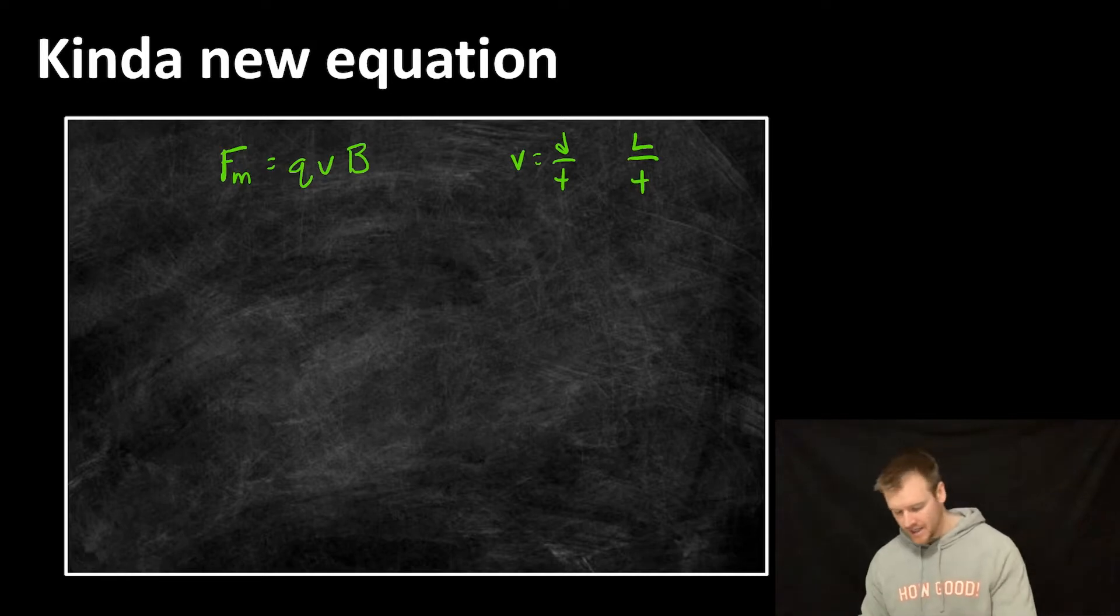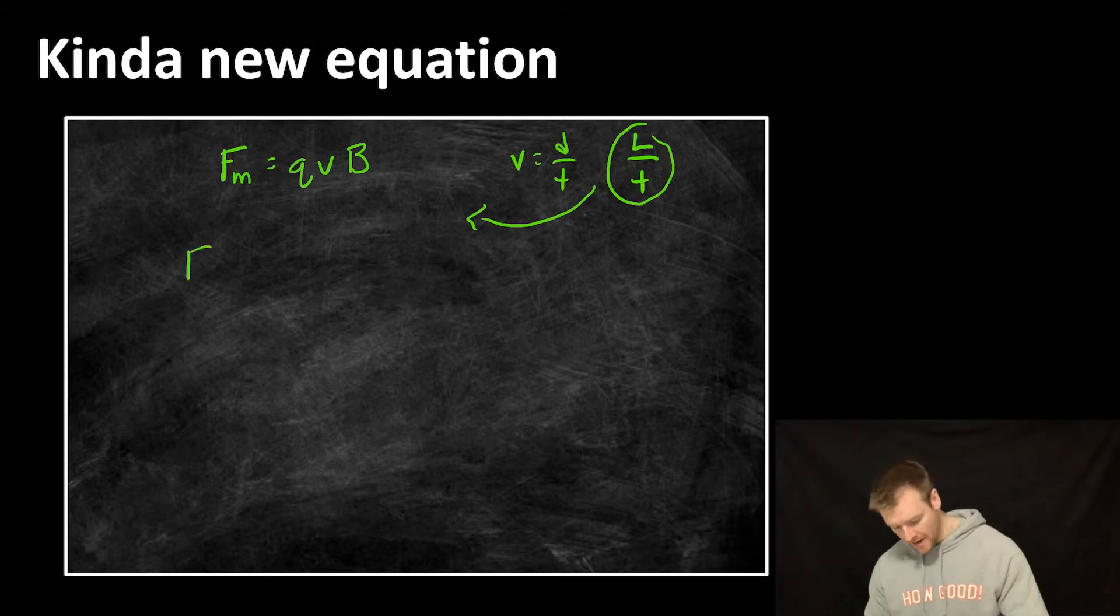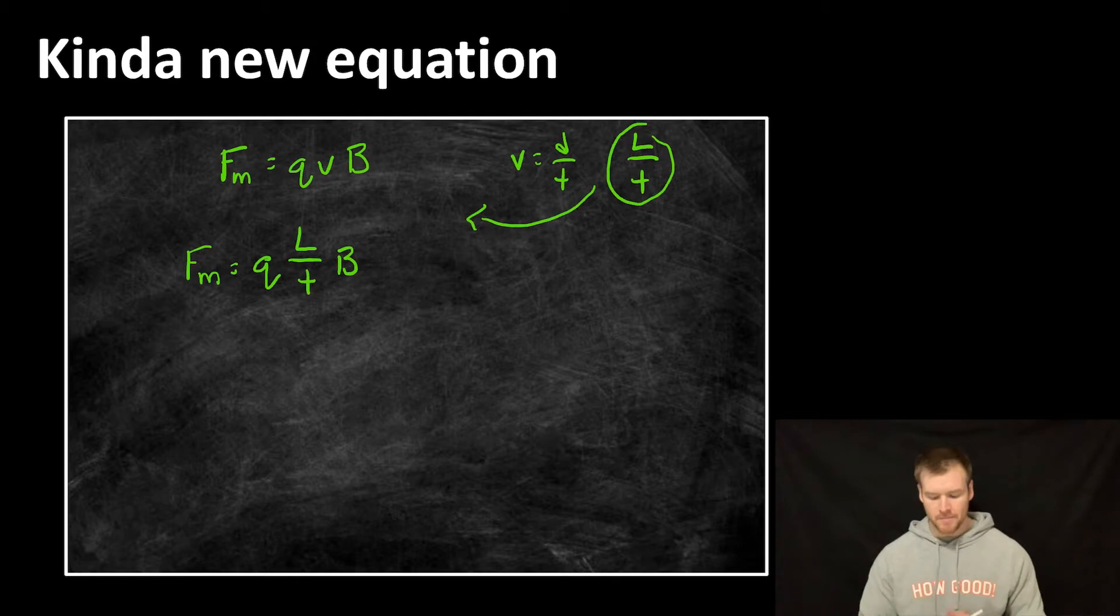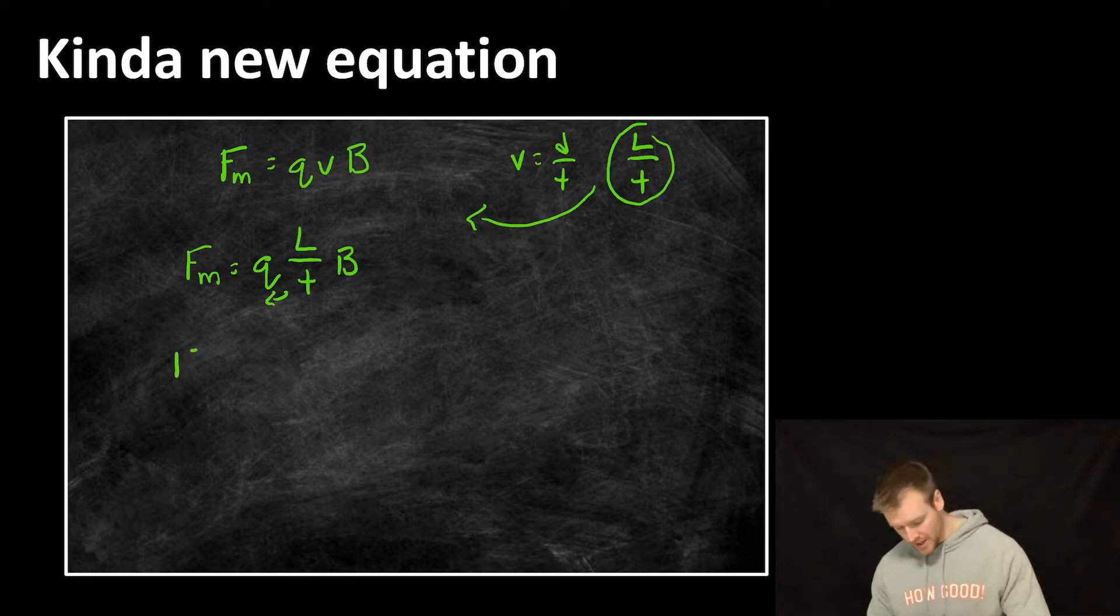Now I'm going to take this formula and plug it back in to our original. So let's write FM is equal to Q L over T. That's replacing velocity again, times by B or the magnetic field strength. Now, all I'm going to do here is move that divided by T over to underneath Q. Won't make a difference to our calculations. So I'm just going to have FM is equal to Q over T times L times B.